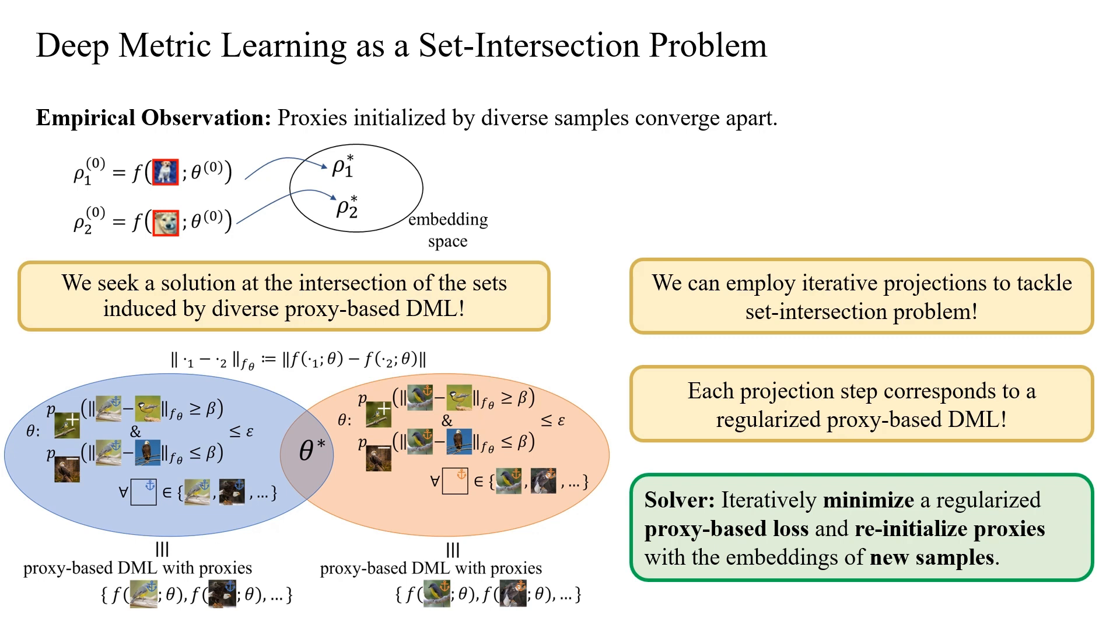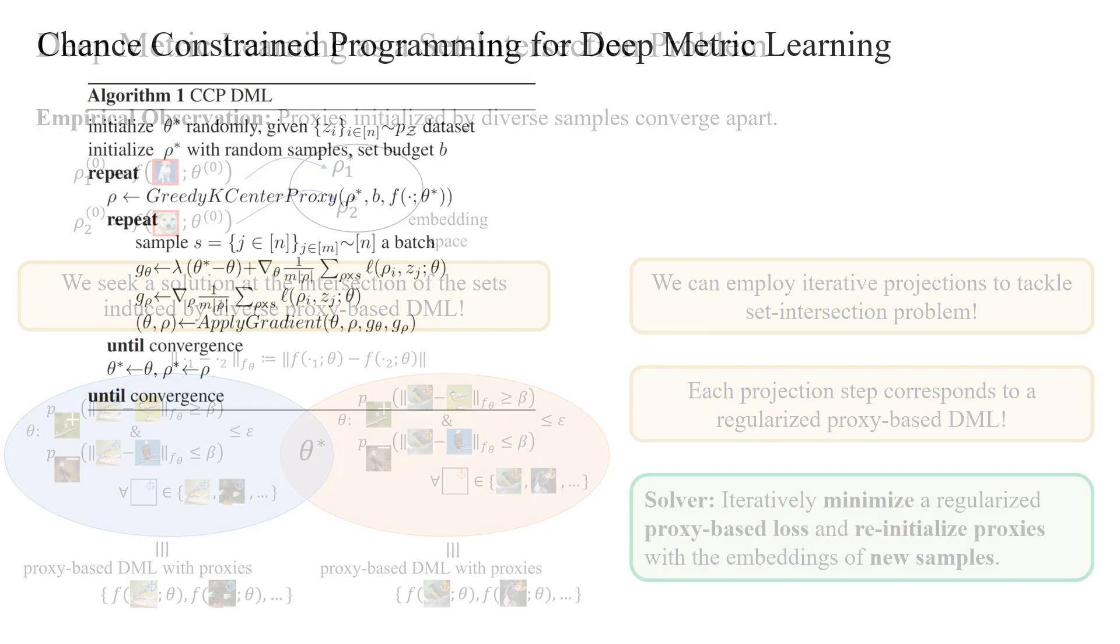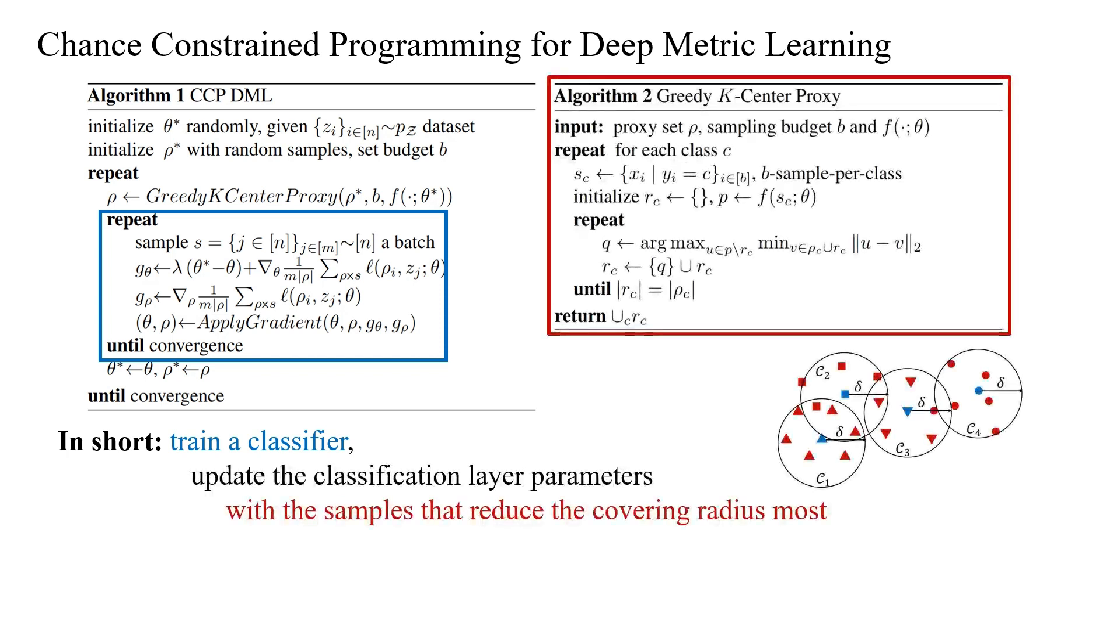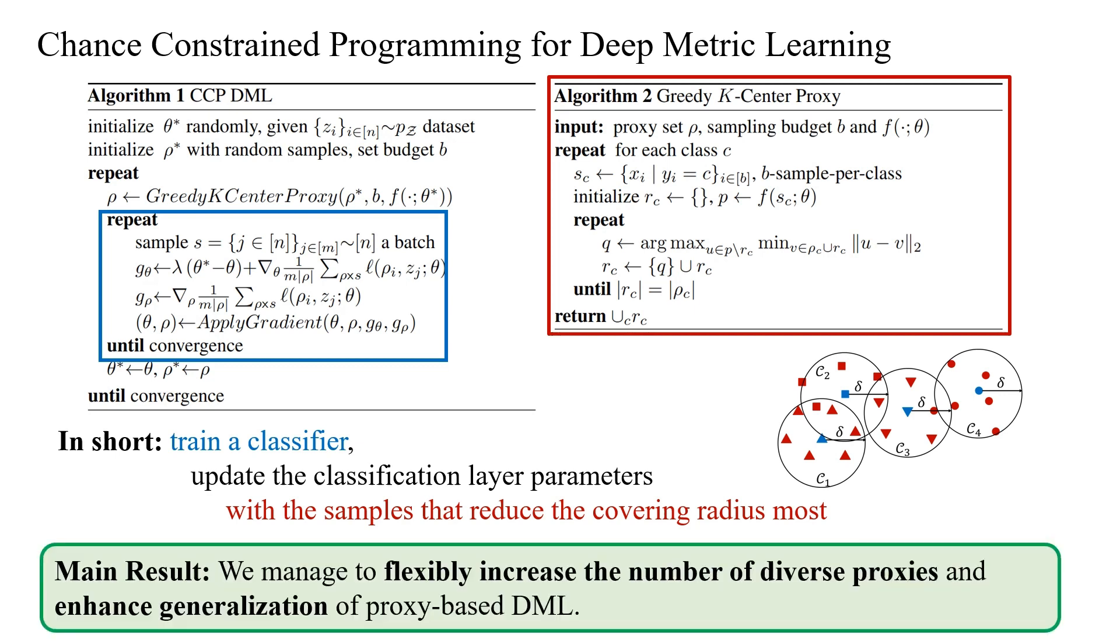This approach not only addresses convergence issues, but also enhances the diversity of proxies for improved metric learning performance. Here is our full method outlined. In short, we train a classifier and update the classification layer parameters with the samples that reduce the covering radius most. This approach enables us to seamlessly augment the number of diverse proxies, leading to a significant enhancement in the generalization of proxy-based deep metric learning.